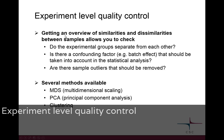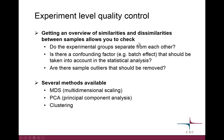The idea here is to get an overview of the similarities and dissimilarities between our samples. We want to know if our experimental groups — say cancer samples and normal samples, or untreated and treated samples — actually separate from each other. We also want to find out if there's a confounding factor, some sort of batch effect, that should be taken into account when doing the statistical analysis.